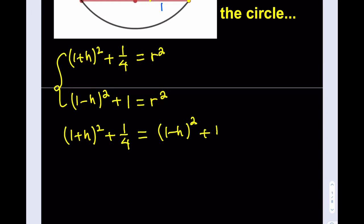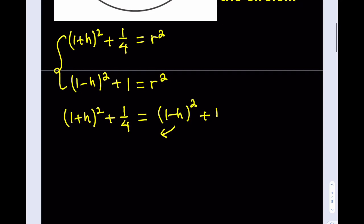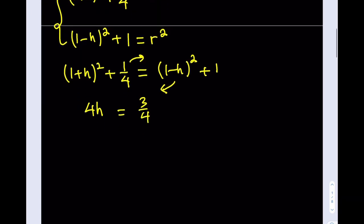Beautiful. Now, we can go ahead and take advantage of the fact that if we subtract this expression from its counterpart, we're going to get four times a times b. So that's going to give us four h. So we get four h here. And if we subtract one fourth from the one, we'll get three fourths. And if we divide both sides by four or multiply by one fourth, we'll get h equals three over 16.